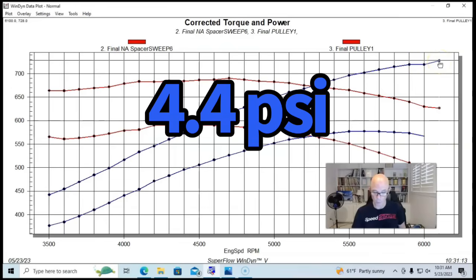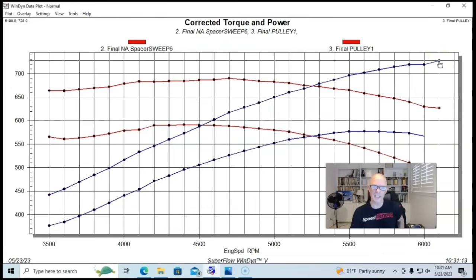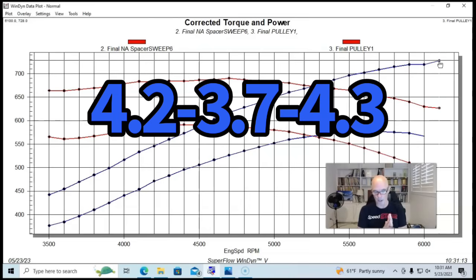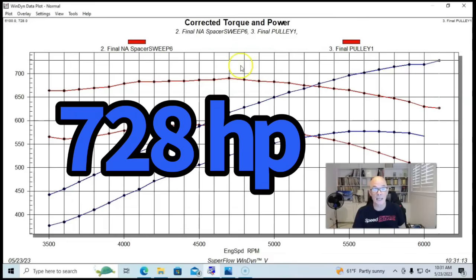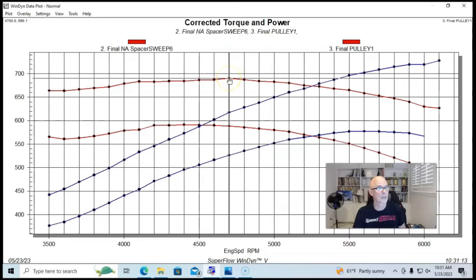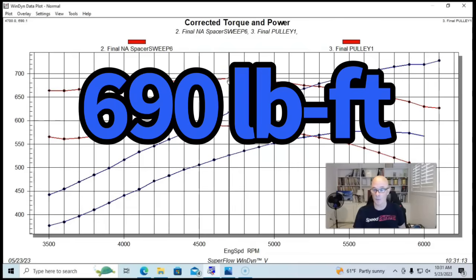In fact, we produced a peak out here at 6100 RPM, we produced a peak of 4.3 pounds. And the interesting is the boost curve started out on the load in at 4.2 pounds, dropped down to 3.7 pounds, and then rose back up to 4.3 pounds at 6100 RPM. And equipped with this blower and this drive ratio at 4.3 pounds, we produced 728 horsepower and 690 foot pounds of torque.